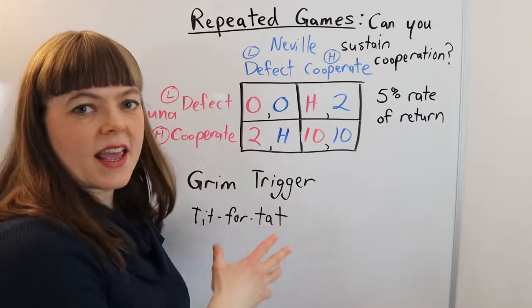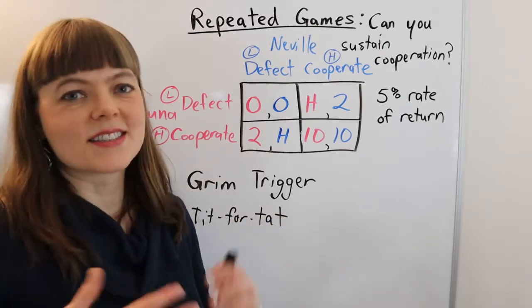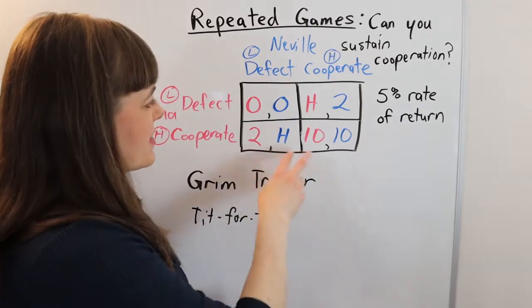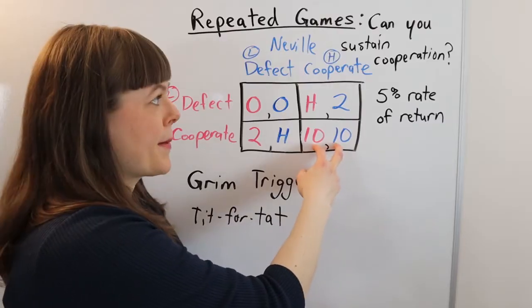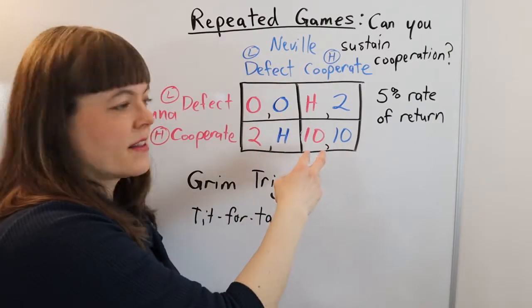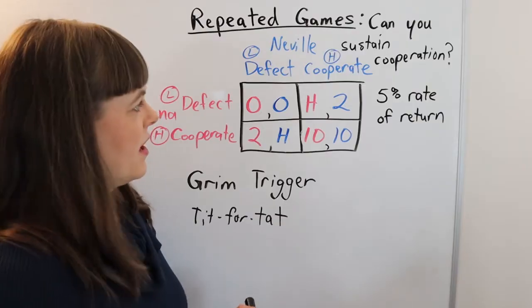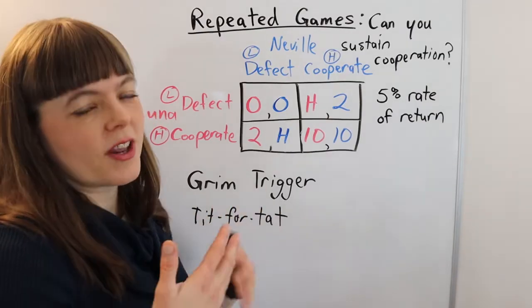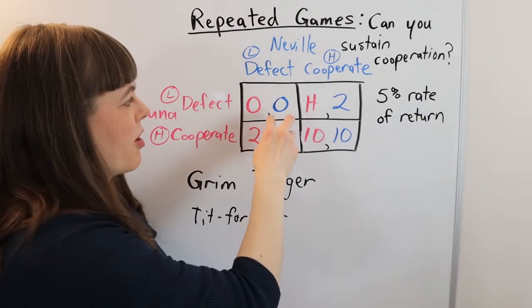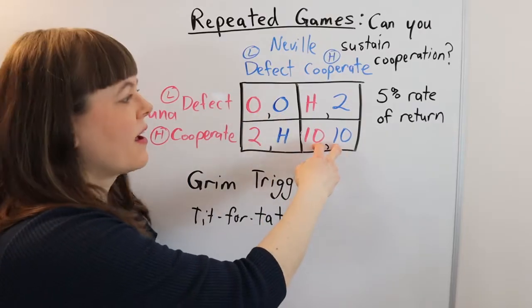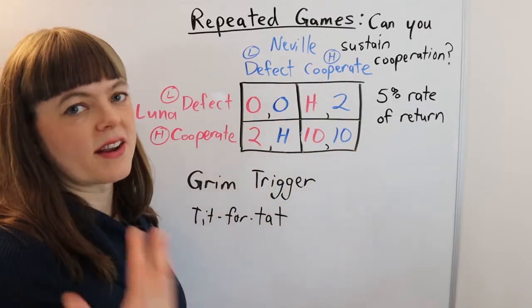Now tit for tat is a lighter version of that. It's less punitive and it basically says I will cooperate today, but if you defect, then I'm going to defect for the next round. But then again, you can redeem yourself under tit for tat, where if you go back to cooperating, I will go back to cooperating the next round.